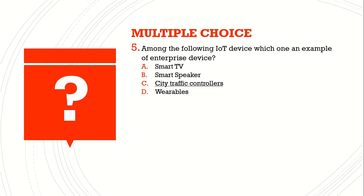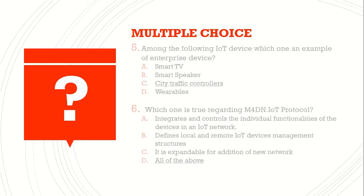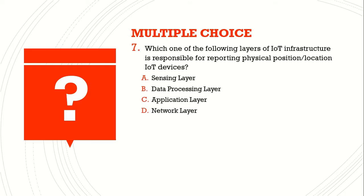Question number six: which one is true regarding M4D and IoT protocol? A) it integrates and controls individual functionalities of devices in an Internet of Things network, B) it defines local and remote IT devices management structure, C) it is expandable for the addition of new networks, D) all of the above. The answer is D) all of the above.